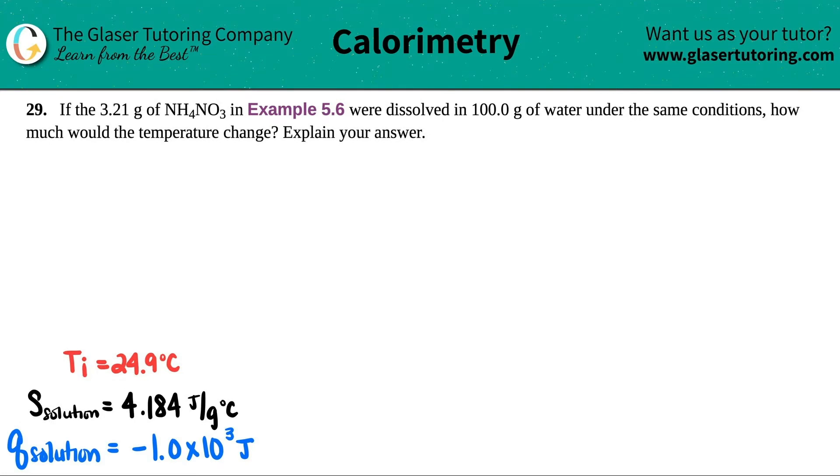Number 29. If the 3.21 grams of ammonium nitrate, which is NH4NO3, in example 5.6, were dissolved in 100.0 grams of water under the same conditions, how much would the temperature change? And then explain your answer.